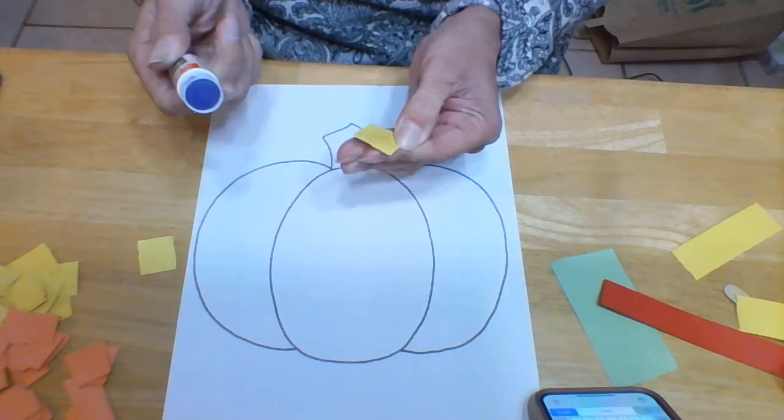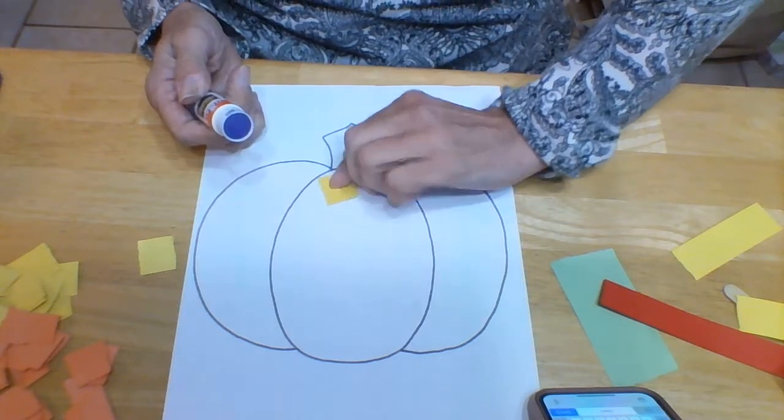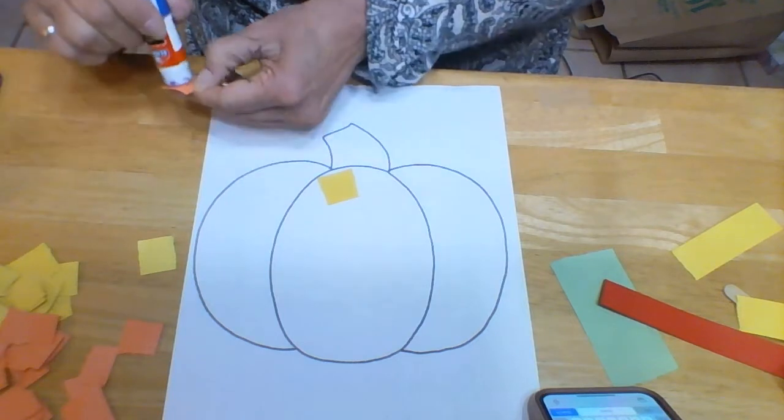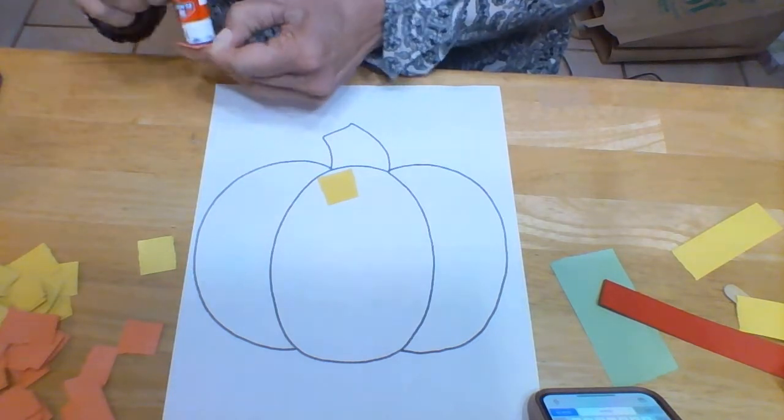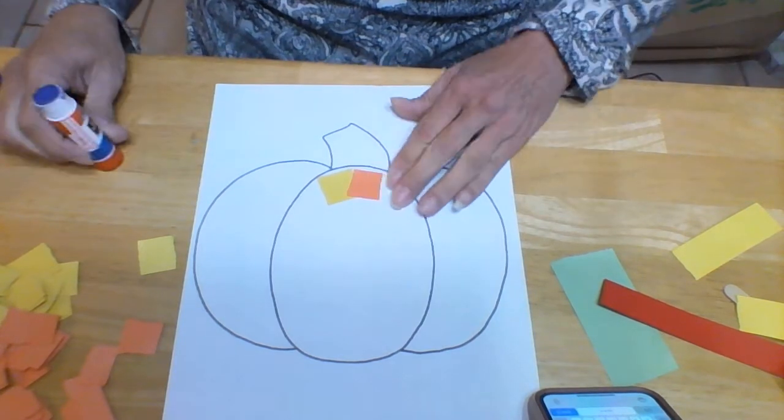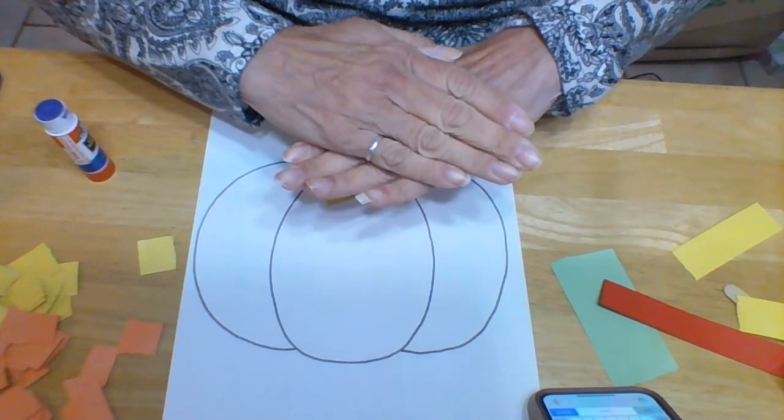We're going to put lots of glue with our glue stick on here. And we're going to overlap the pieces. Overlap means to put one on top of the other, like that. I'm going to overlap my hand.